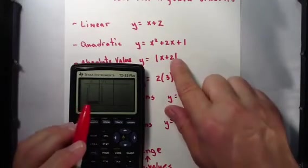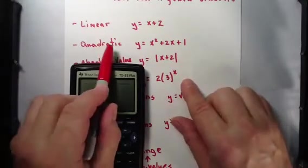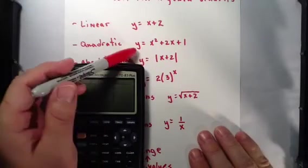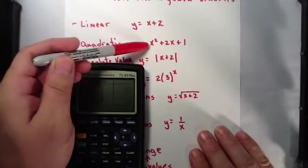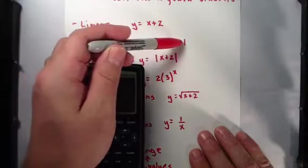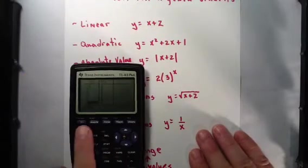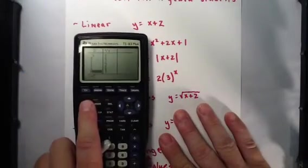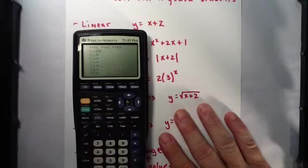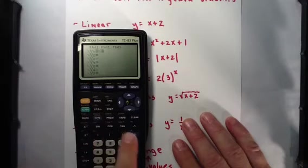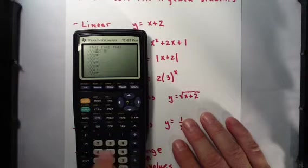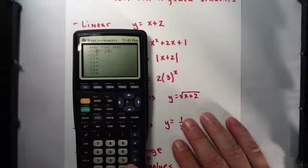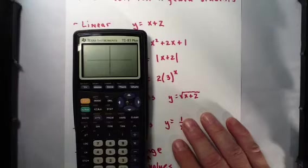One of the functions we spent a lot of time on was the quadratic. Here's an example of a quadratic. Y equals X squared plus 2X plus 1. Let's try that one. Clear the other one. X, up arrow, squared, plus 2X plus 1. Let's take a look at that graph.